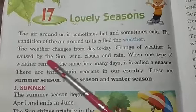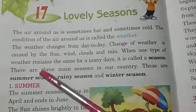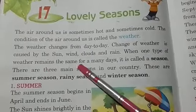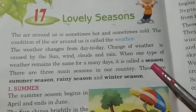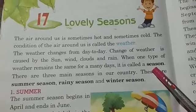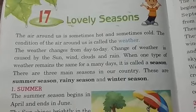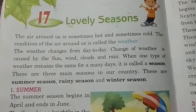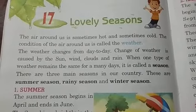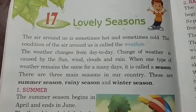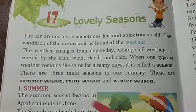Change of weather is caused by the sun, wind, clouds, and rain. When one type of weather remains the same for many days, it is called a season.